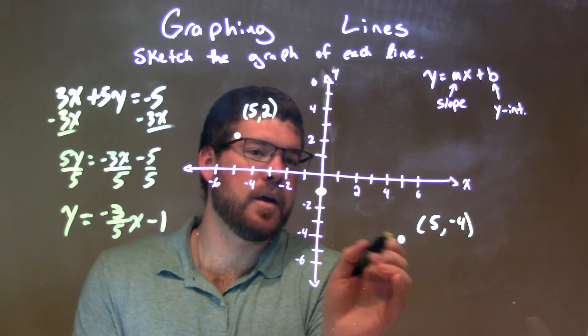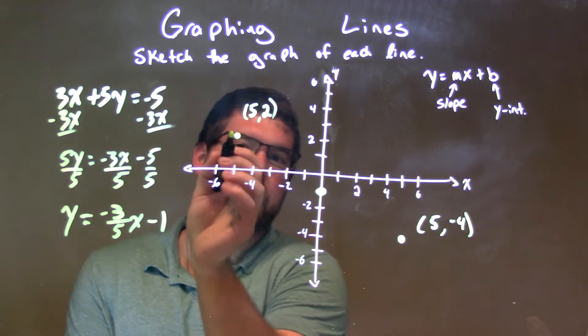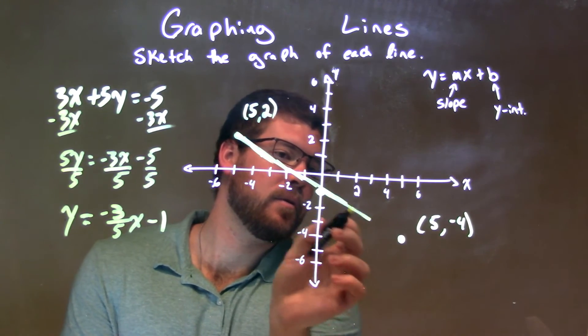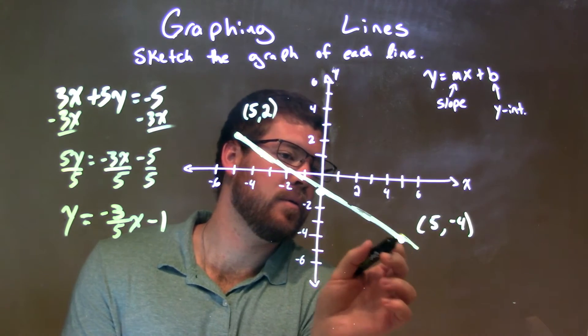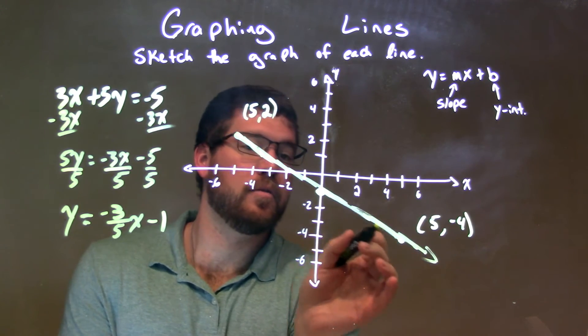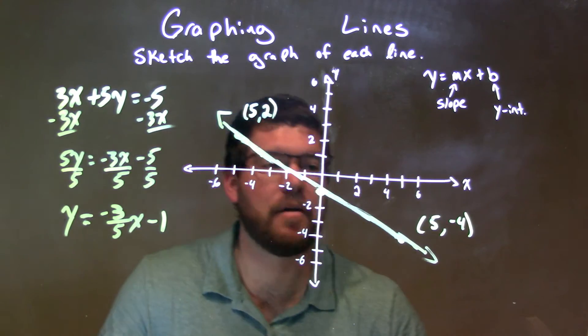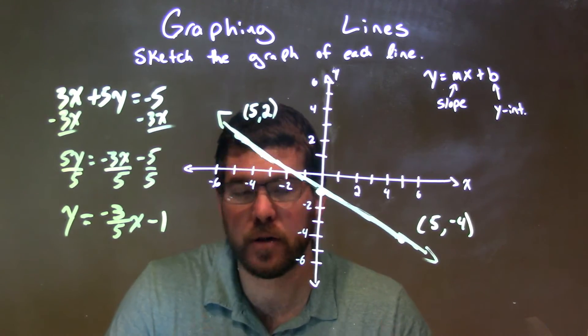So we connect these dots. Let me see if I can get the line at this angle, but there we go. This is really using a straight edge, but there we have it. We have our line.